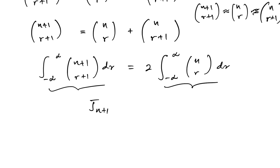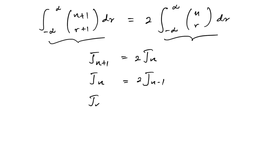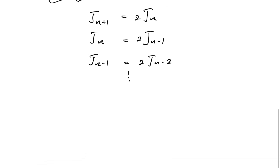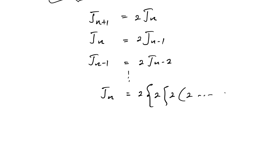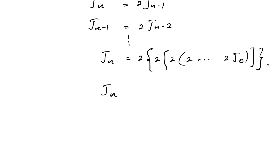So J_{n+1} = 2·J_n, J_n = 2·J_{n-1}, J_{n-1} = 2·J_{n-2}, and so on. Telescoping this recurrence, J_n equals 2 to the n times J_0.